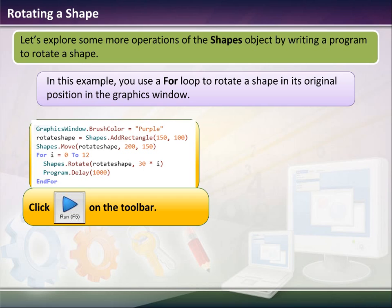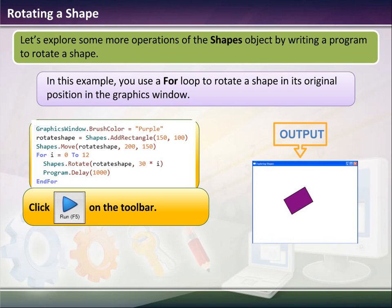The first time it'll rotate 30 degrees, then it rotates to 60 degrees, and then it rotates to 90, and so on and so forth. Basically what you'll have is you'll have a rectangle that rotates, and it'll rotate once every second.